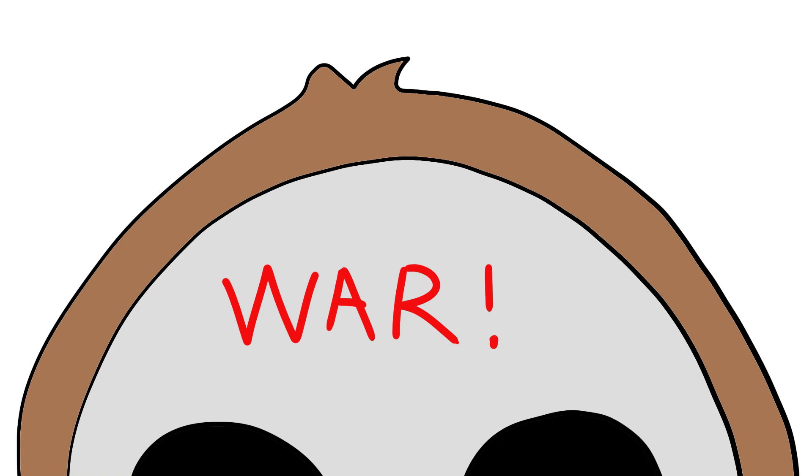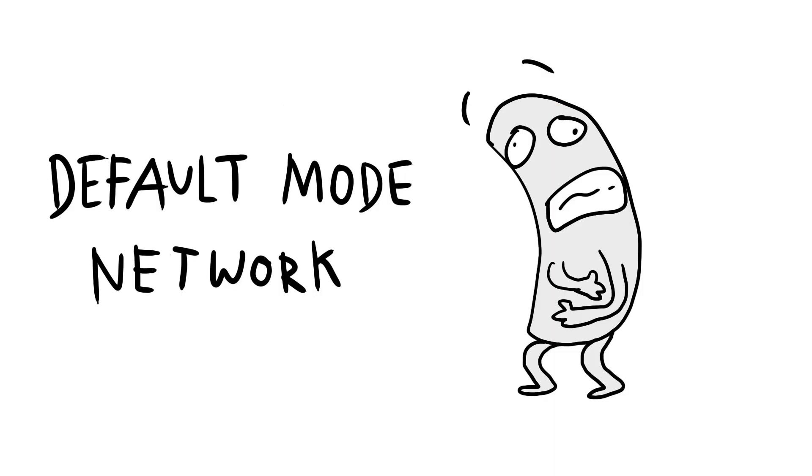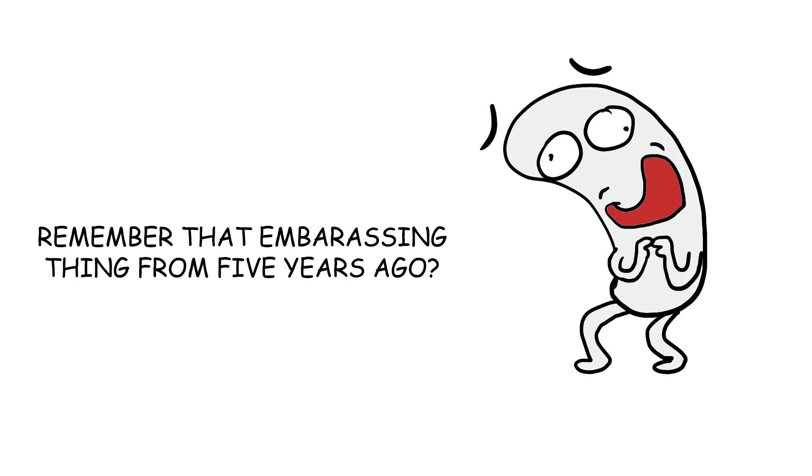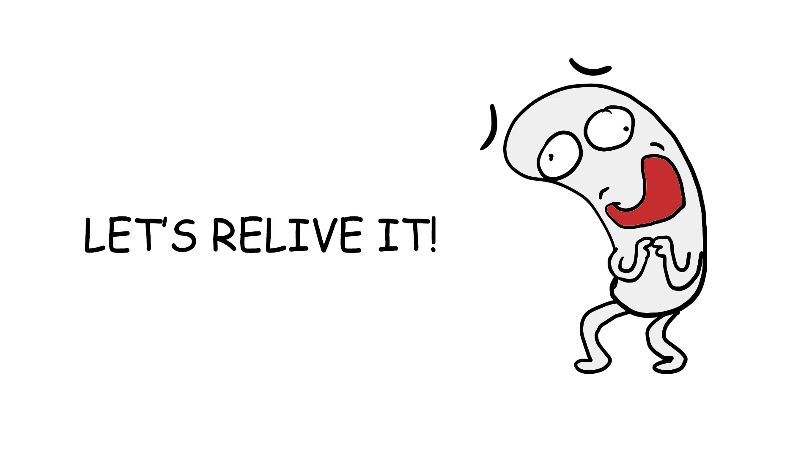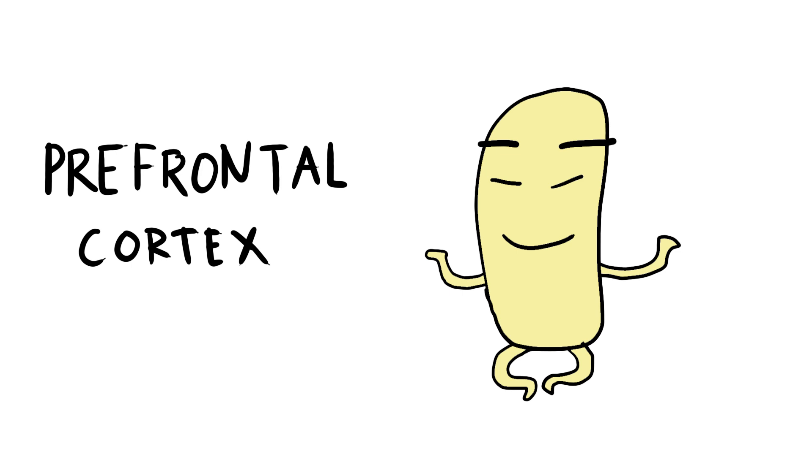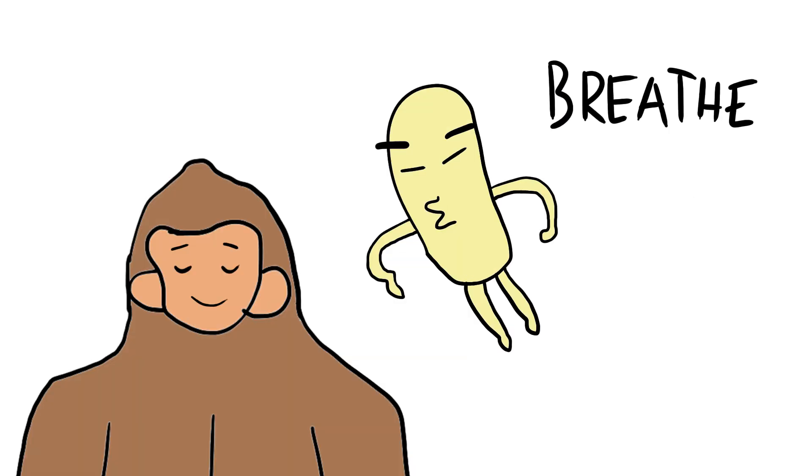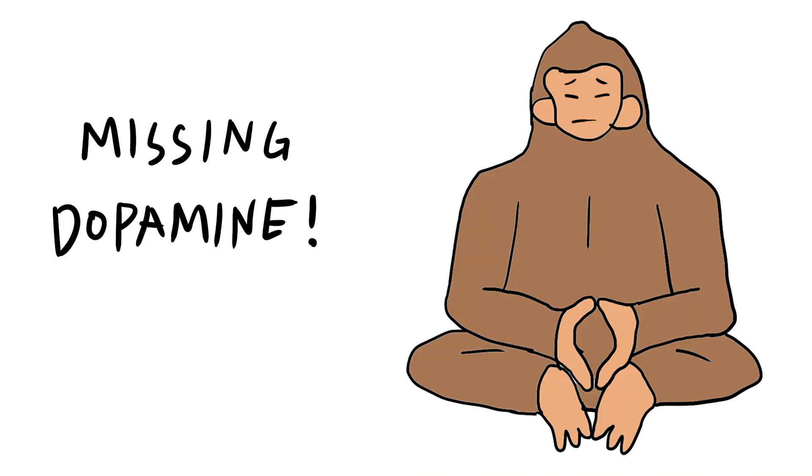Inside monkey's skull, there's a war. The default mode network, the part of the brain that wanders and worries, starts firing. It says, 'Remember that embarrassing thing from five years ago? Let's relive it.' Meanwhile, the prefrontal cortex, the wise part that helps focus, is trying to calm things down. It whispers, 'Breathe, monkey, just breathe.'